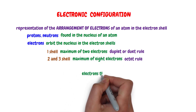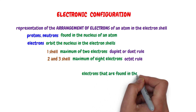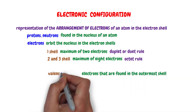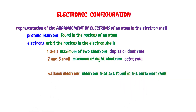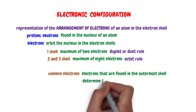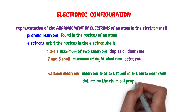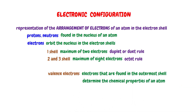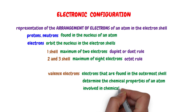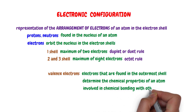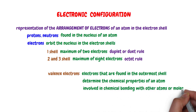Electrons that are found in the outermost shell are called valence electrons. These electrons determine the chemical properties of an atom. They are the electrons involved in chemical bonding with other atoms or molecules.